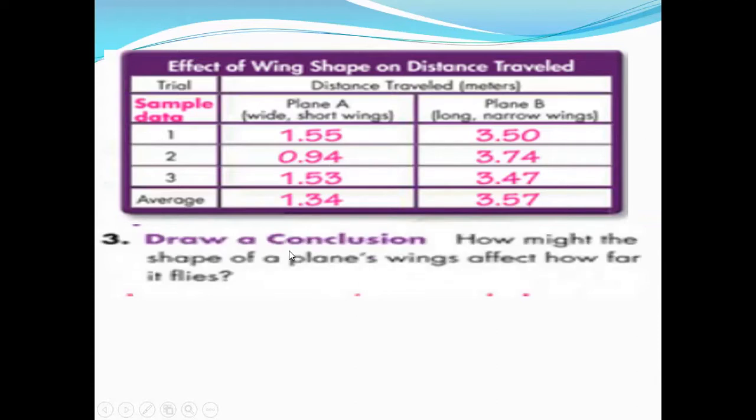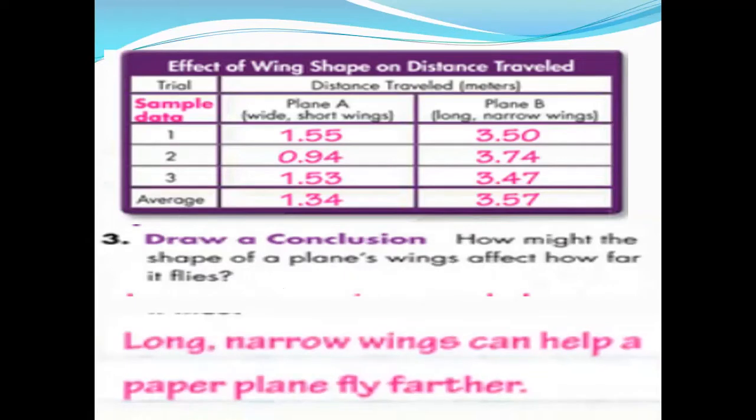Who can read for us question number three? Draw a conclusion. How might the shape of a plane's wings affect how far it flies? Long, narrow wings can help a paper plane fly further. As you see in the video, the long, narrow wings can help a paper plane fly further.